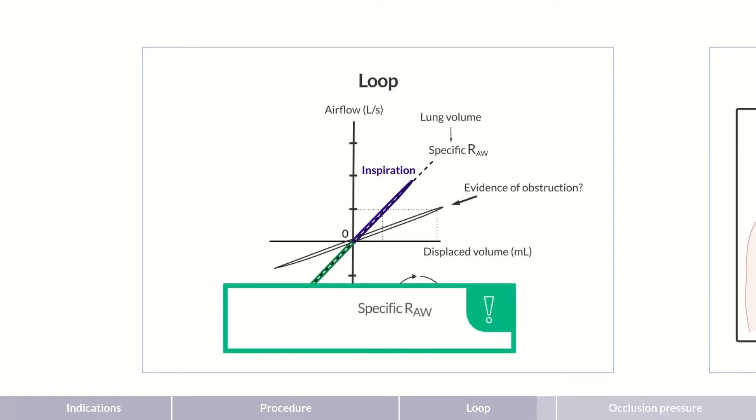The specific resistance must, therefore, be related to lung volume, that is, the total lung capacity to accurately determine an obstruction. This results in a numerical value, the airway resistance, also termed resistance. But how do we determine the lung volume required?